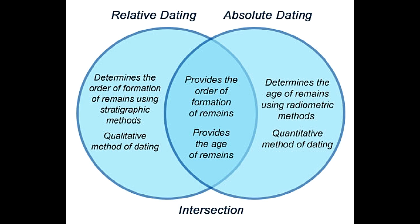The following are the major methods of relative dating. Stratigraphy — the oldest dating method, which studies the successive placement of layers. It is based on the concept that the lowest layer is the oldest and the topmost layer is the youngest.